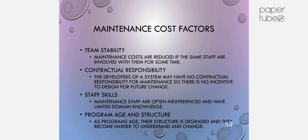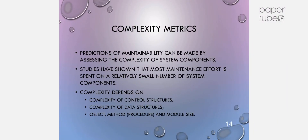Maintenance cost factors include team stability, contractual responsibility, staff skills, and program age and structure. Complexity metrics: predictions of maintainability can be made by assessing the complexity of system components. Studies have shown that most maintenance effort is spent on a relatively small number of system components. Complexity depends on complexity of control structures, complexity of data structures, object methods, and module size.